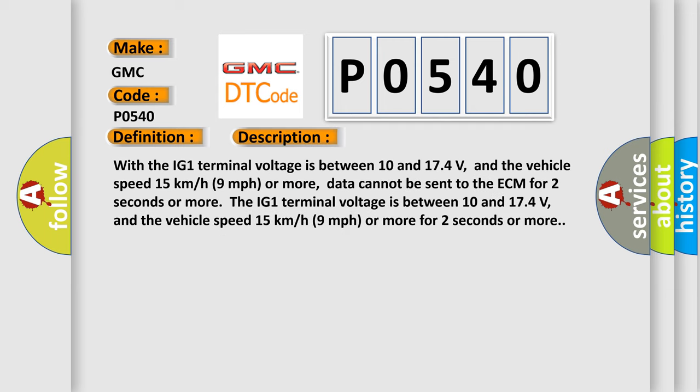With the IG-1 terminal voltage between 10 and 17.4 volts, and the vehicle speed 15 kilometers per hour or 9 miles per hour or more, data cannot be sent to the ECM for 2 seconds or more.